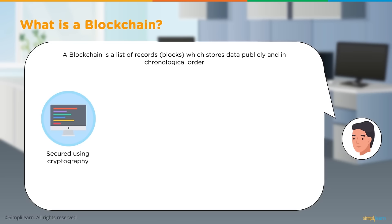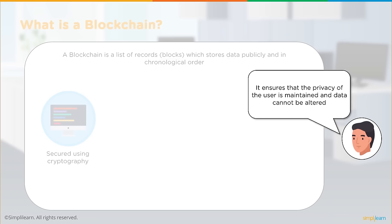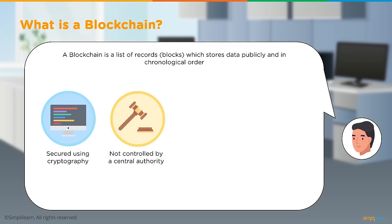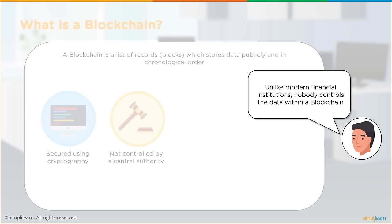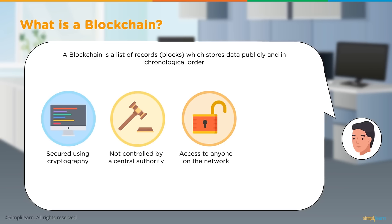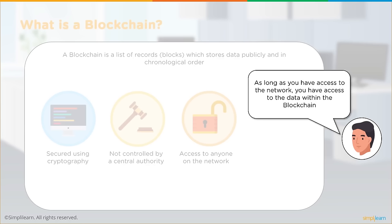Blockchain is a list of records called blocks that stores data publicly in a chronological order, persisted using cryptography. The privacy of the user is maintained and data cannot be altered. Information on a blockchain network is not controlled by a centralized authority — nobody controls the data; it is maintained by the participants. It is accessible to anyone on a public blockchain network.